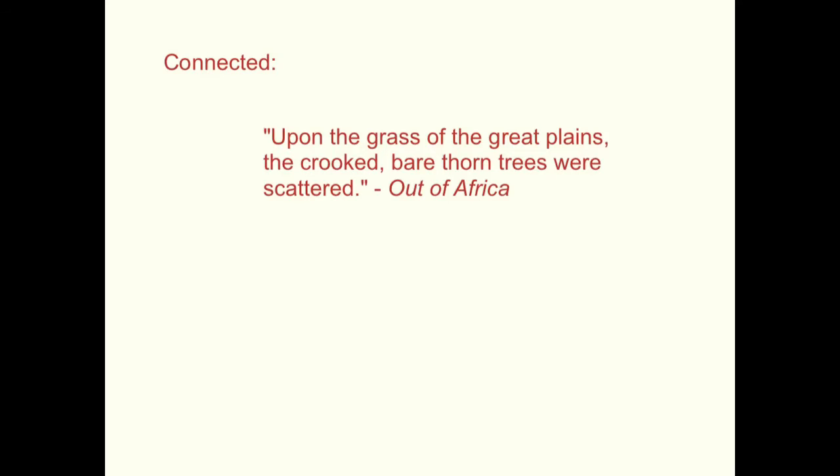Then we have the connected prepositional phrases. Upon the grass. It was upon the grass. Of, another preposition, the Great Plains. The crooked bear thorn trees were scattered. That's from Out of Africa. So you have two different prepositional phrases here. But they're working together. So you'll find that since there are two, we have a comma right here.